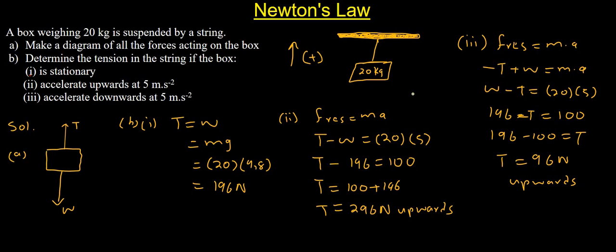Let's do a recap. Our question stated: a box weighing 20 kg is suspended by a string. They said make a diagram of all the forces acting on the box. We said the tension is acting upwards and it is balanced by the weight acting downwards. The box is not moving left or right, hence we don't have any forces on the left or right hand side.